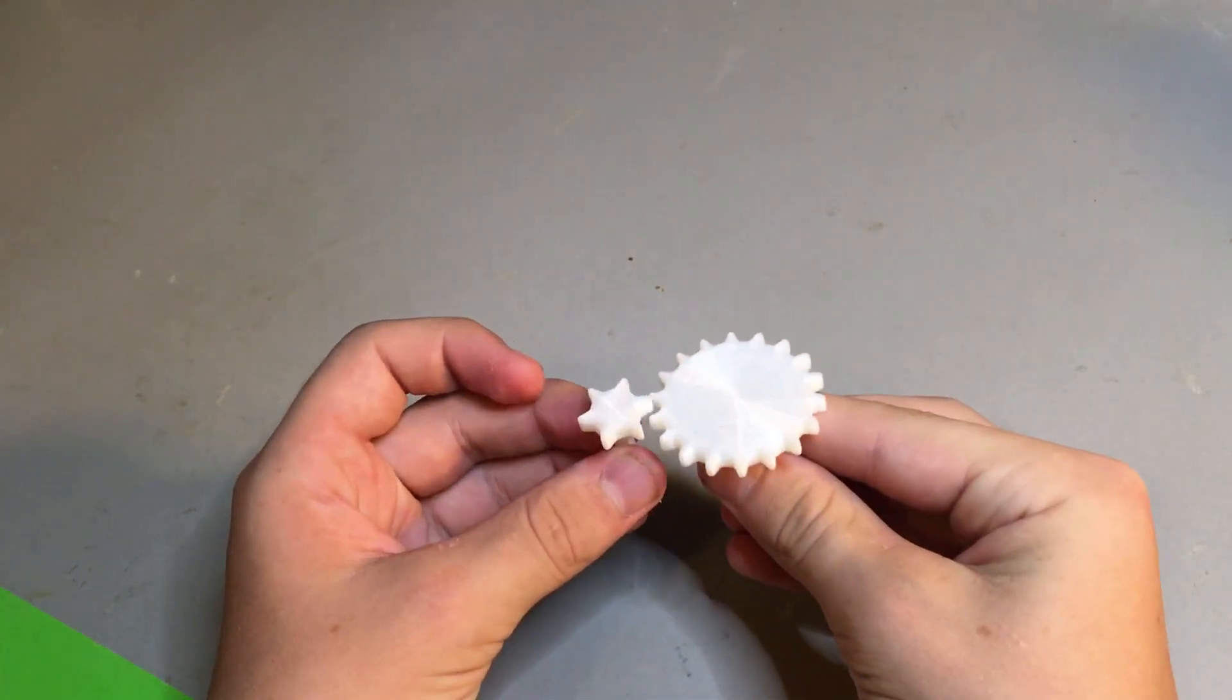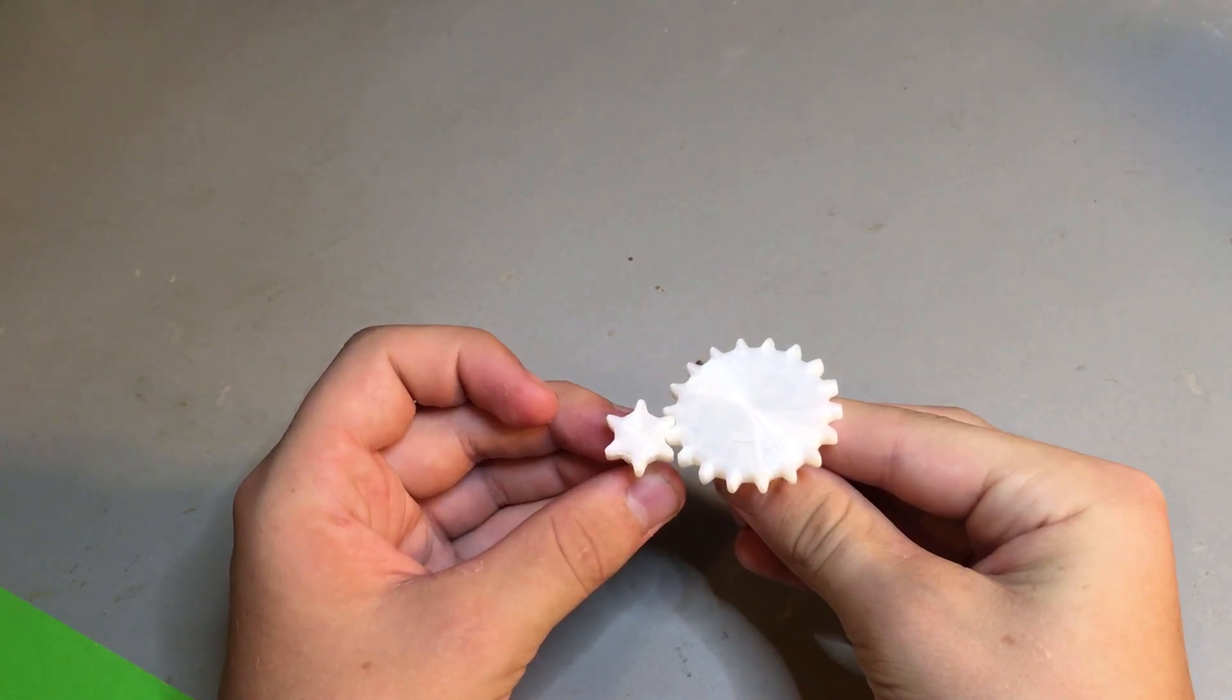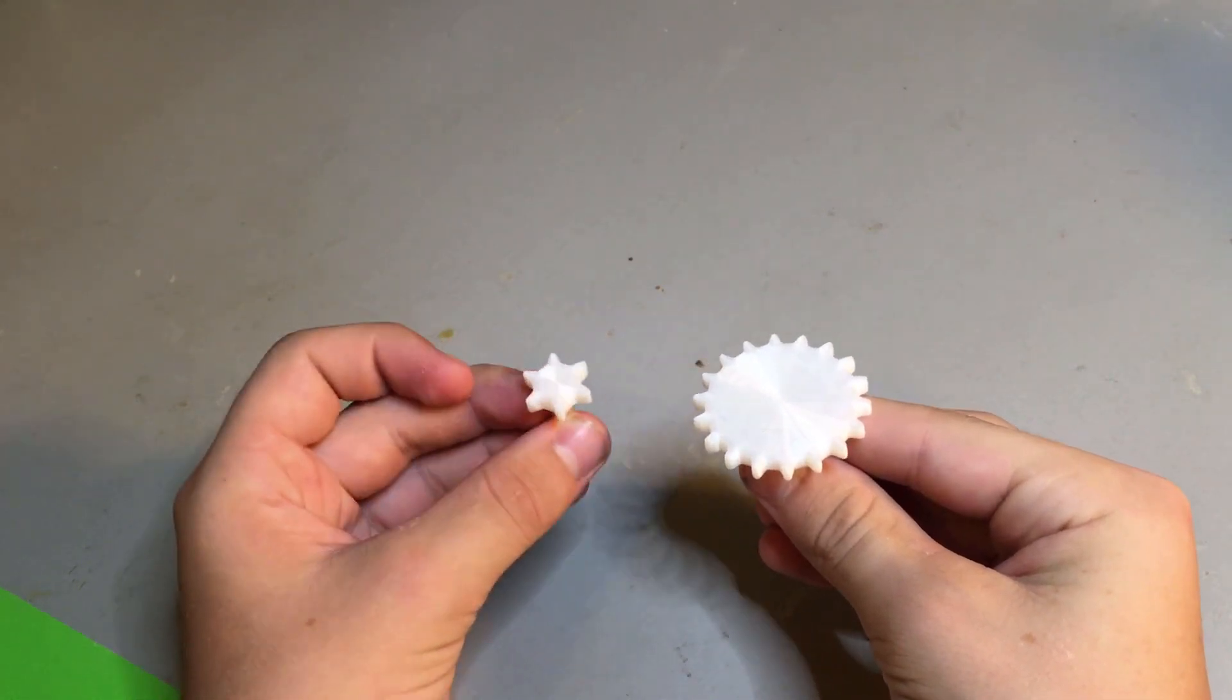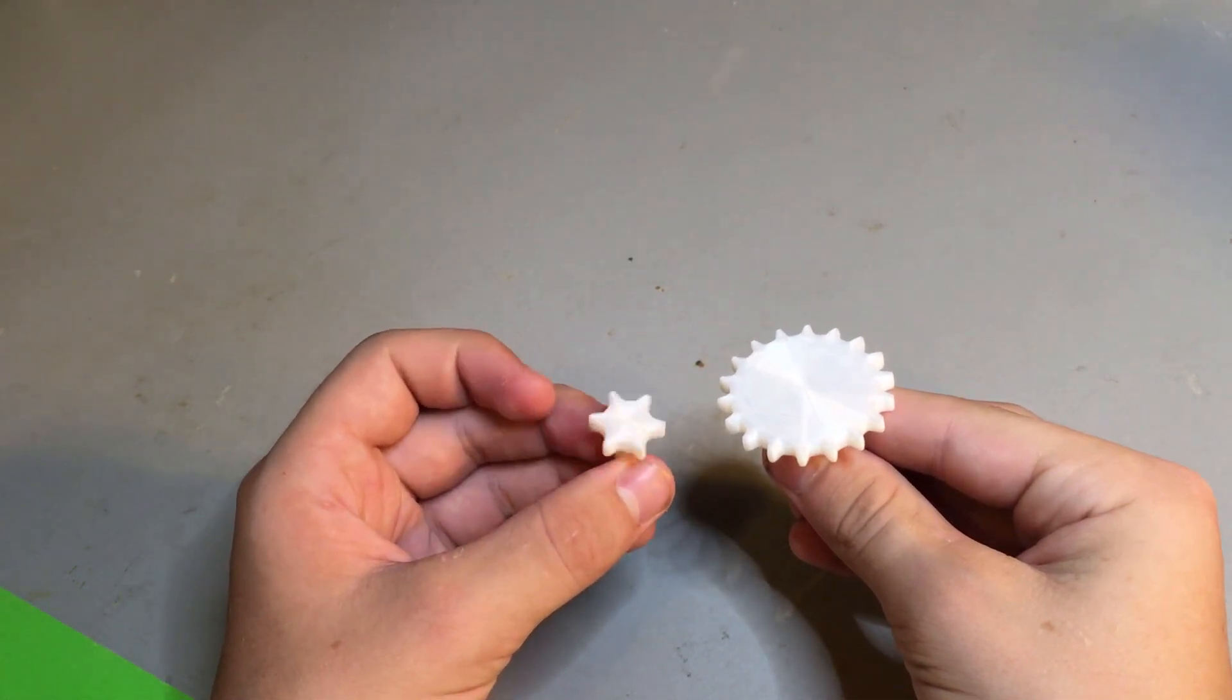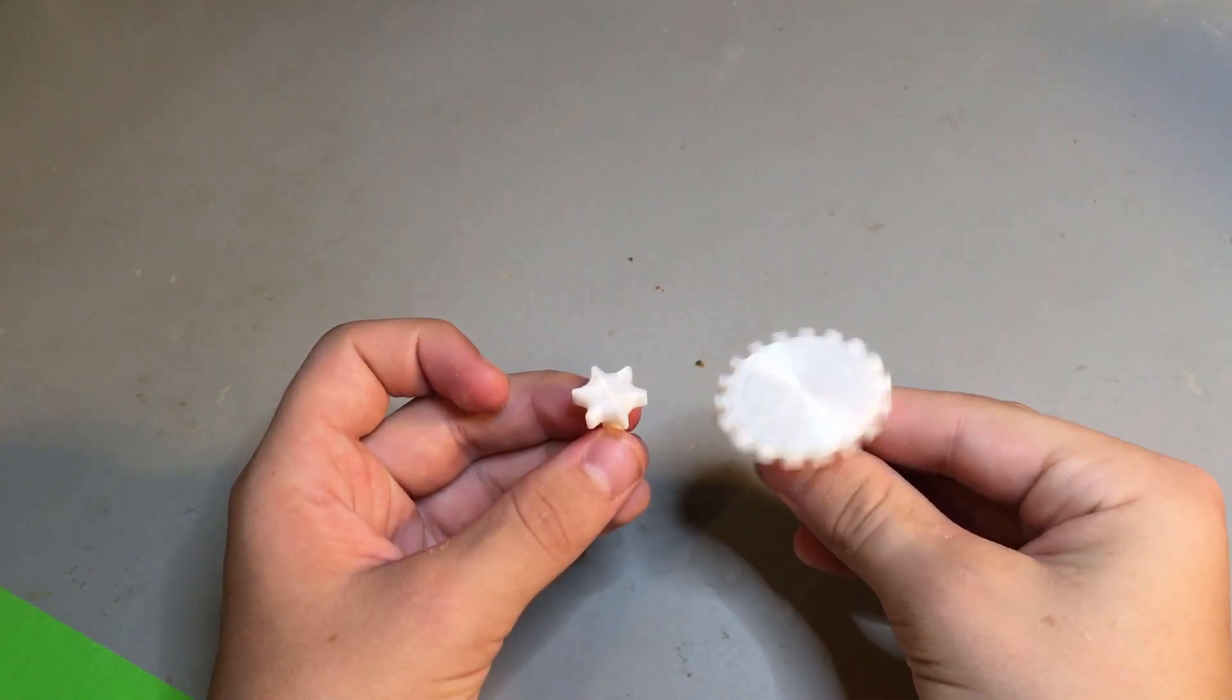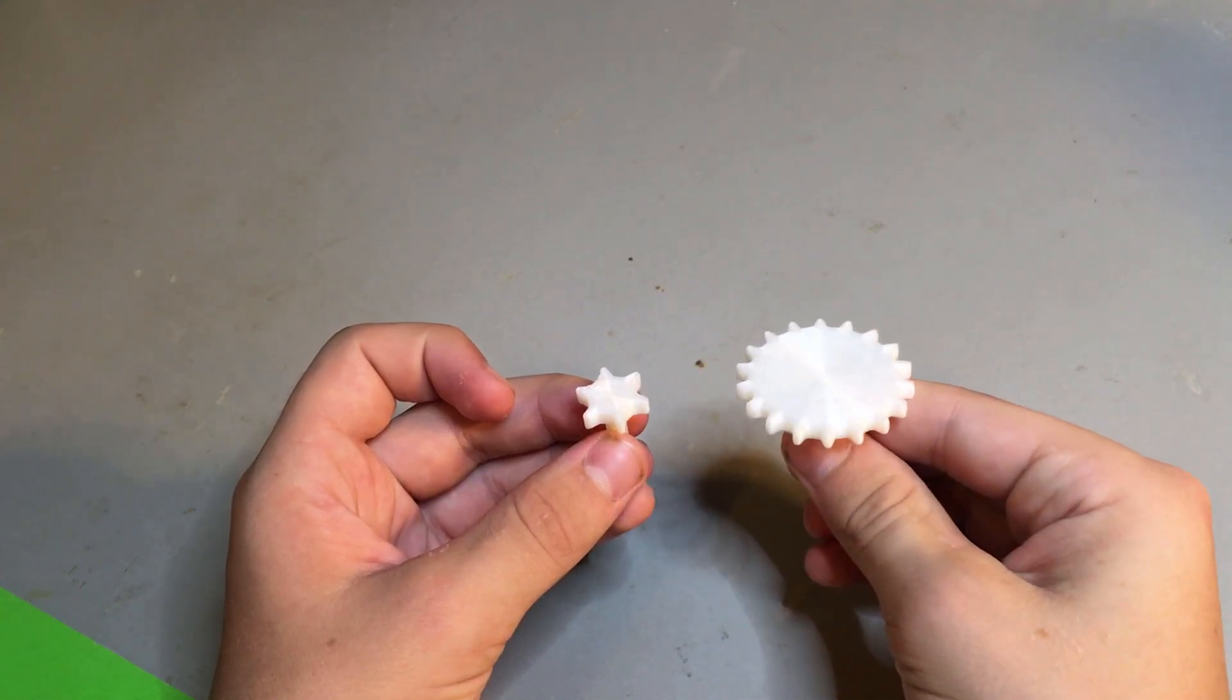In this case, it has 6 teeth to 18 teeth, or 1 to 3. That means the smaller, 6-tooth gear will rotate 3 times for every 1 rotation of the larger gear.